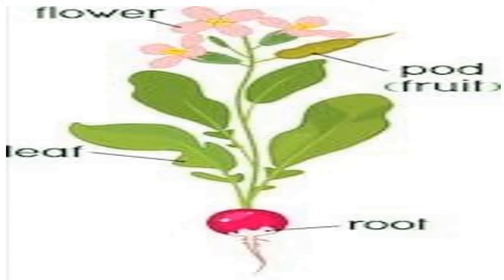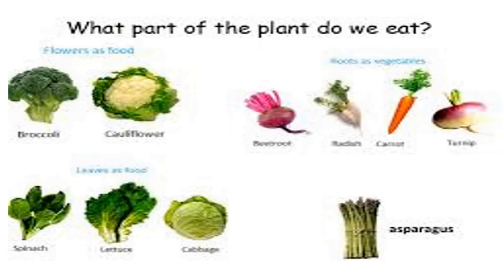No, right? Students, do you know we cannot eat all plants' roots, stems, leaves and flowers. Let us know which parts of plants we can eat. As a flower, we eat broccoli and cauliflower. As a root, we eat beetroot, radish, carrot and turnip. As a leaf, we can eat spinach, lettuce, cabbage, etc. And as a stem, we can chew sugarcane and asparagus.